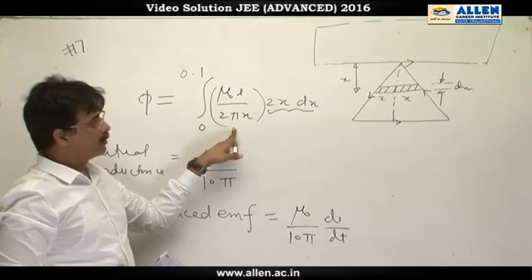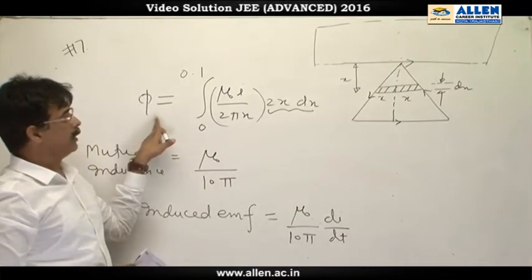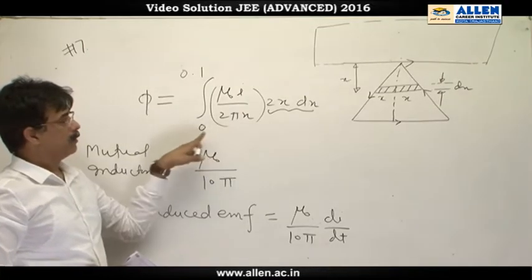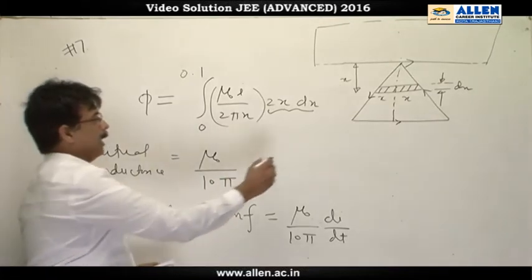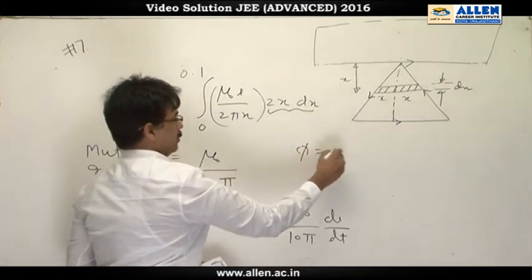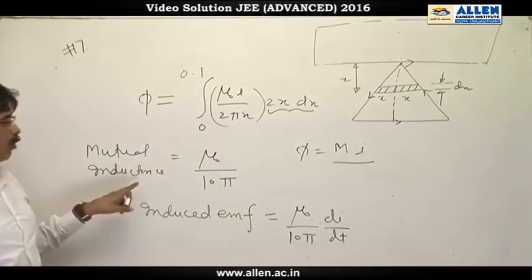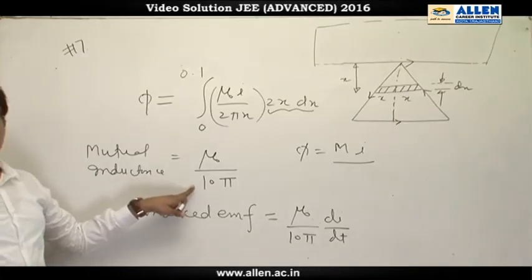So flux linked with this triangular coil is integral of B dot A, which on integrating and writing flux as Mi, we get coefficient of mutual inductance, which is mu not upon 10 pi.